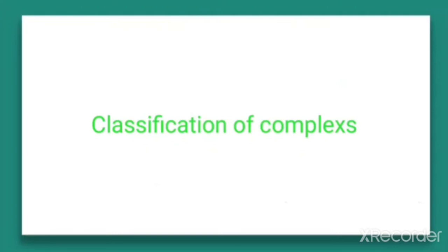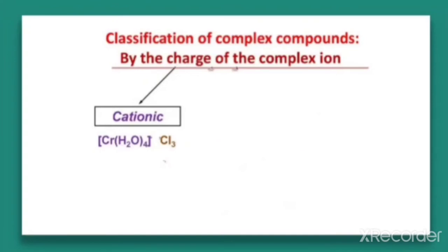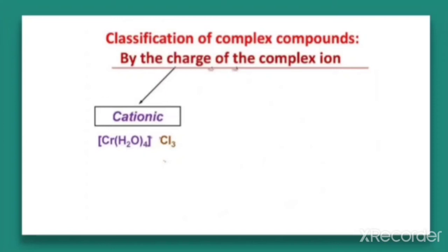Now we will discuss the classification of complexes. Complexes are classified by the charge on the complex ion — for example, a cationic complex. How do you identify whether it is a cationic complex? In this case, the central metal is Cr, the ligands are 4 H2O, and there is one counter ion, Cl3. Cl3 is the negatively charged counter ion, written on the right hand side of the bracket. When this counter ion ionizes and is removed, it results in the removal of 3 Cl−, forming 3 positive charges on the complex.